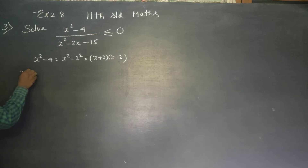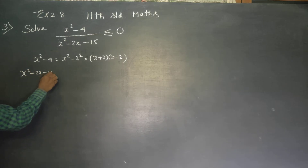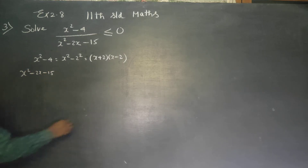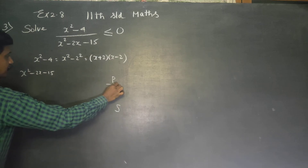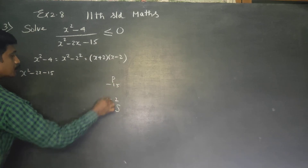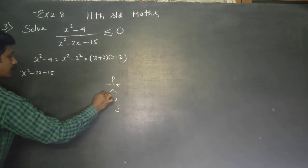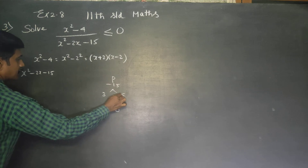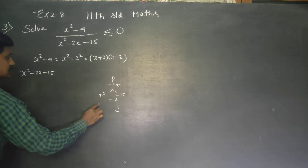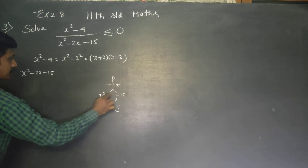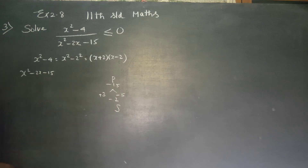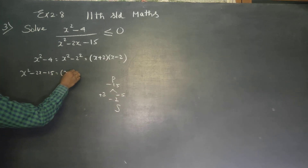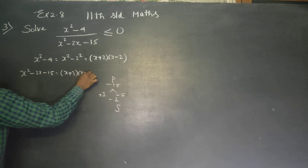Then x squared minus 2x minus 15. Using the product-sum method: product is minus 15, sum is minus 2. We need 3 and 5 since 3 times 5 is 15, with signs minus and plus. So this can be written as x plus 3 into x minus 5.